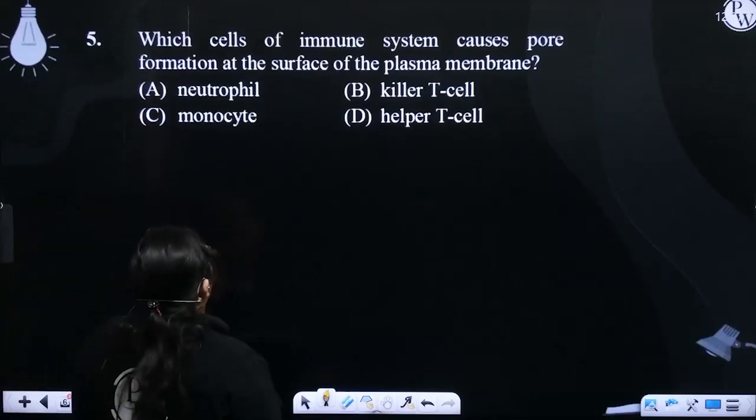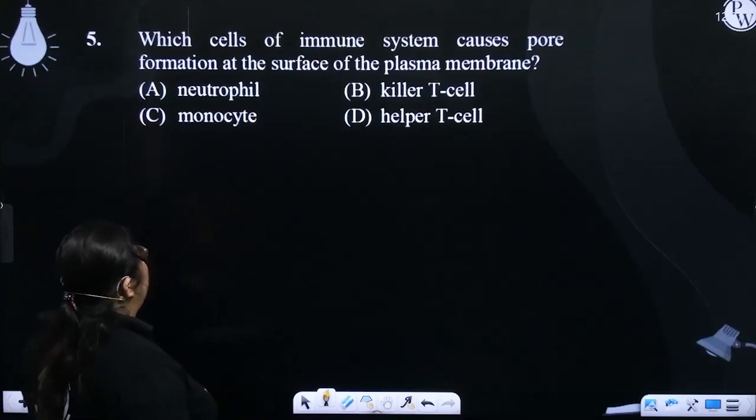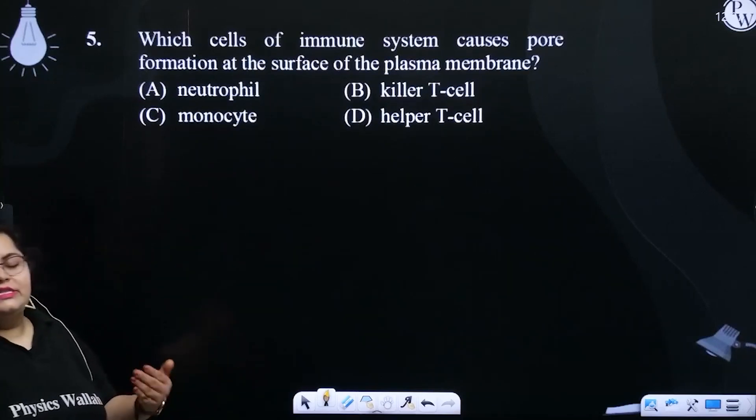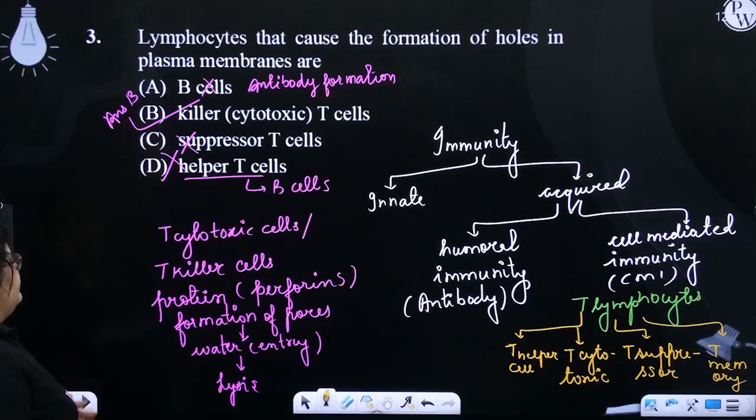Which cell of immune system cause pore formation at the surface of plasma membrane? So, we have seen that this pore formation is done by which cells?